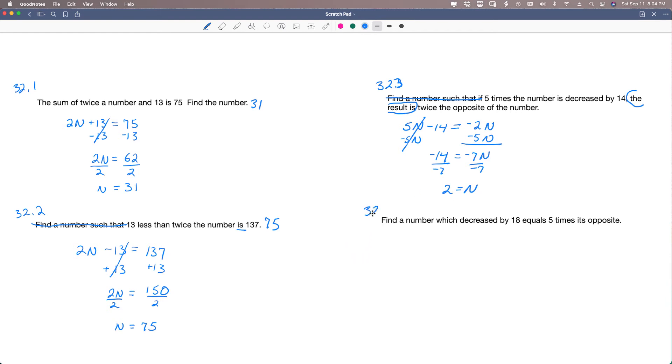Let's do 32.4. Find a number, of course it's what we're doing. Decreased by 18 equals 5 times its opposite. So a number decreased by 18 equals 5 times its opposite. So it's going to be negative 5n.